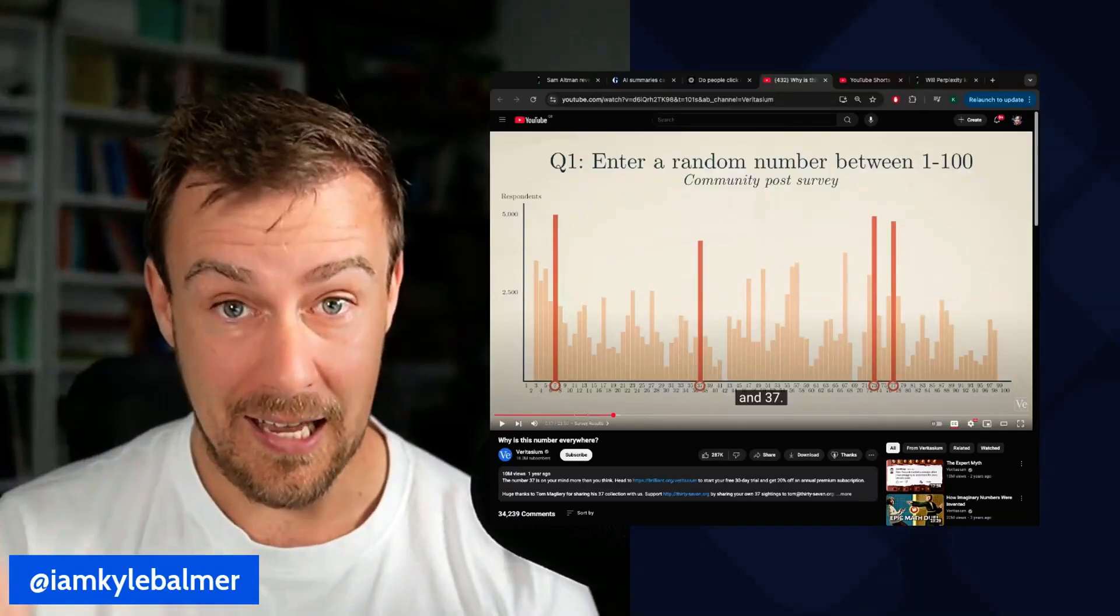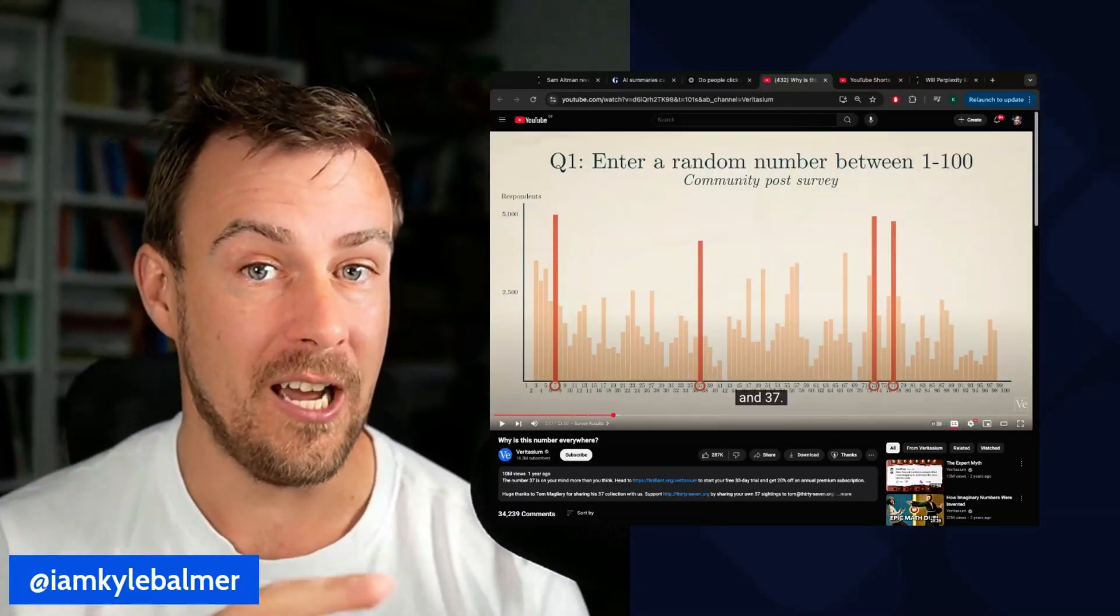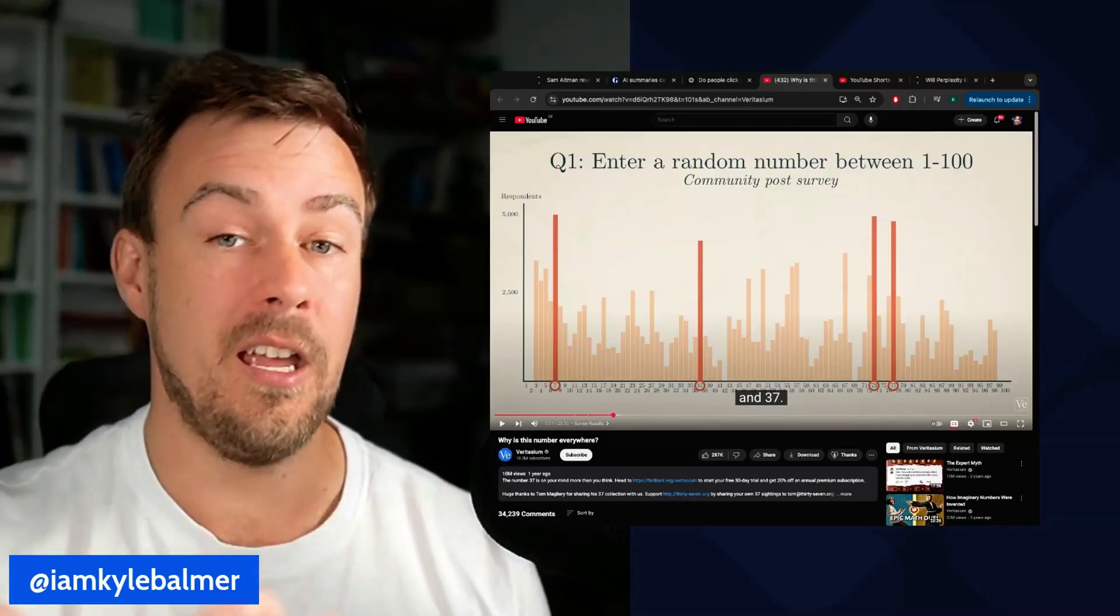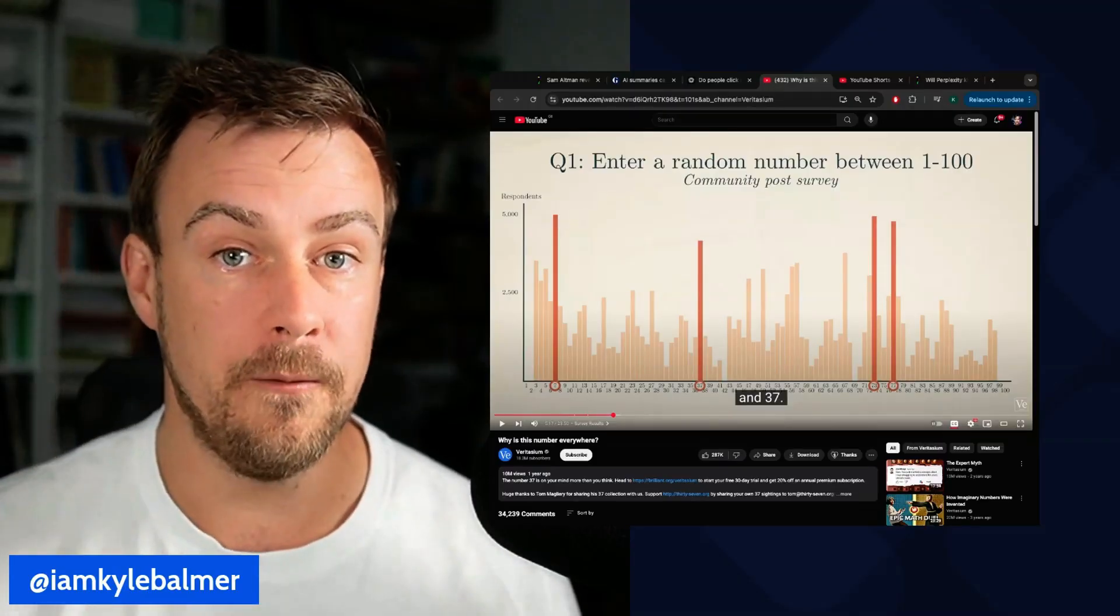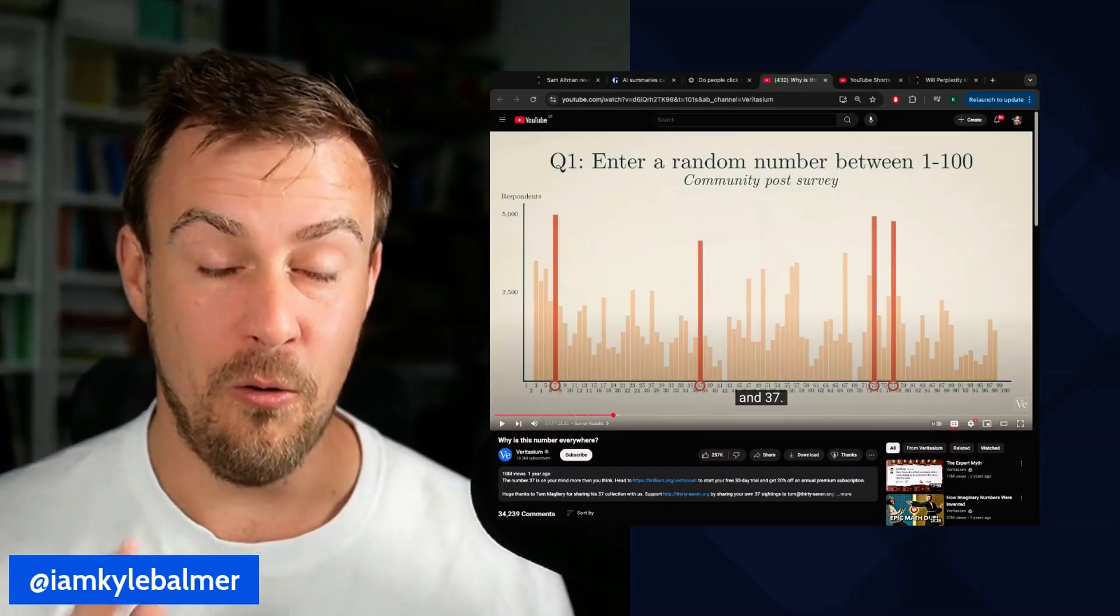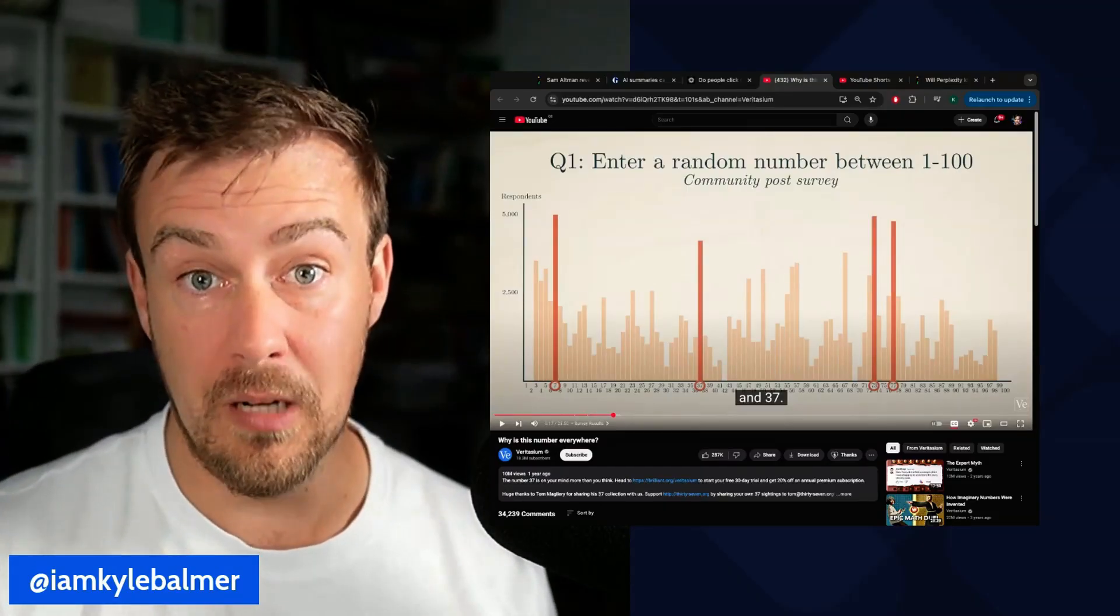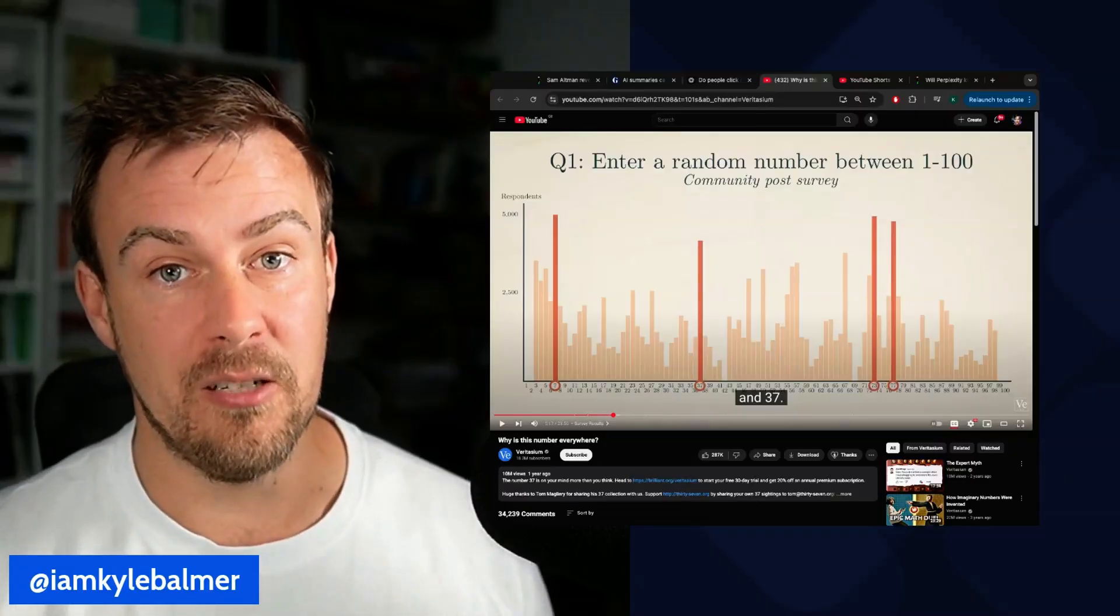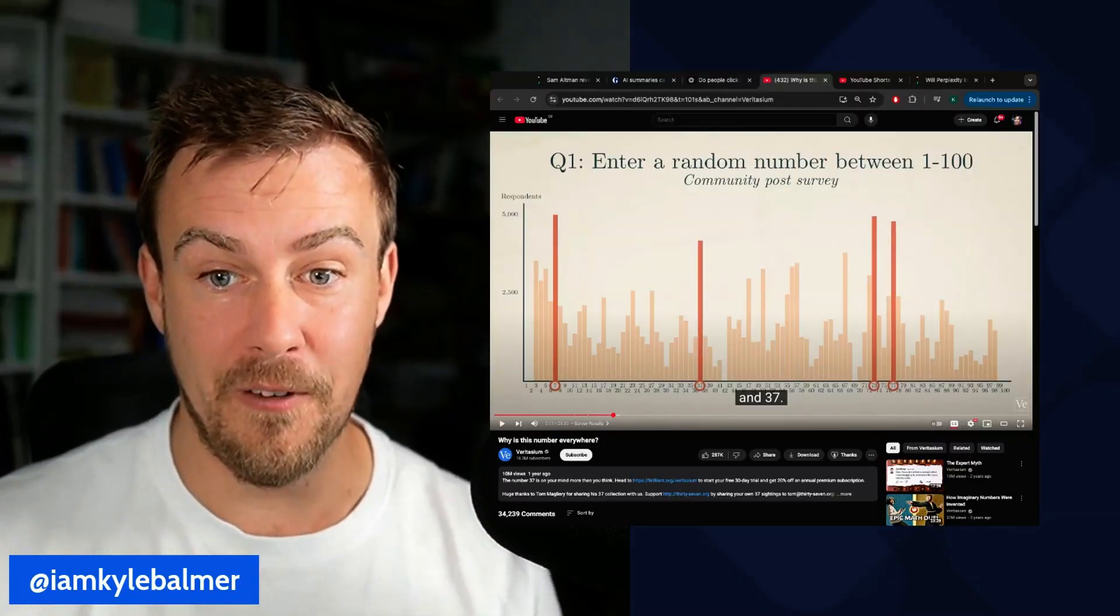So we can get these models to give us a random number, but not using their large language model basis. Instead, what you say is give me a random number between 1 and 50, use Python. So we're asking the AI to use a tool like Python, which is the programming language, in order to generate a random number. And Python has a function which generates random numbers. So that works perfectly.